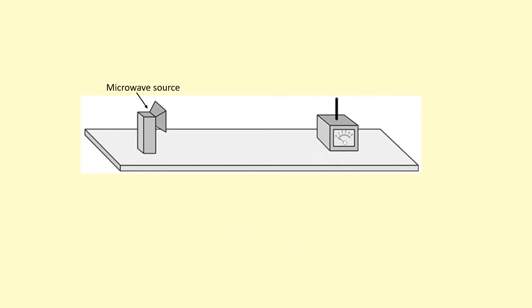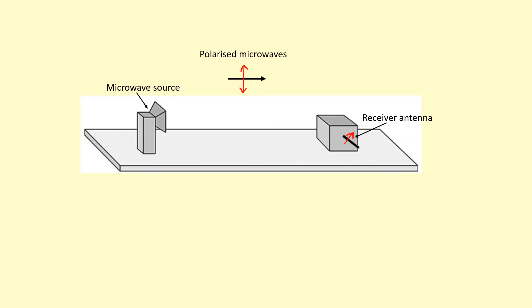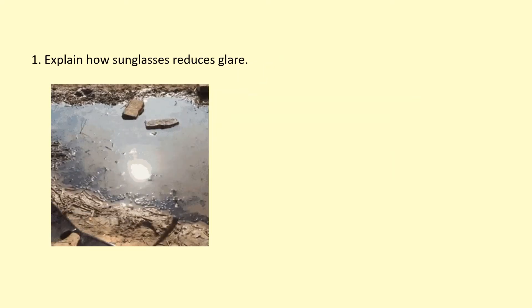Polarization can occur with any transverse wave, meaning any part of the electromagnetic spectrum. For example, a microwave being emitted in a certain direction is already polarized — the electric field oscillates up and down. An antenna receiver will detect a signal when aligned with those oscillations, but if you spin the antenna 90 degrees the signal drops to zero, because there are no components oscillating in that direction. This demonstrates that the microwave is polarized.